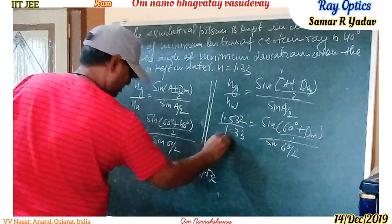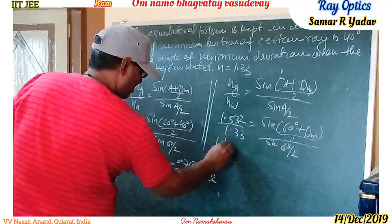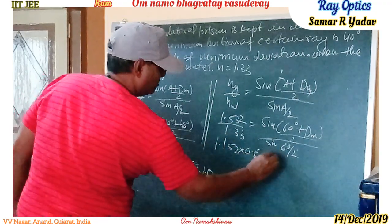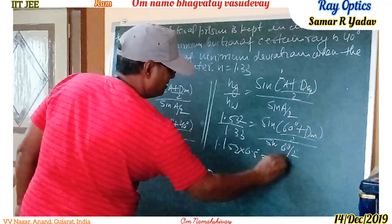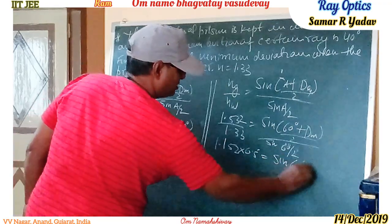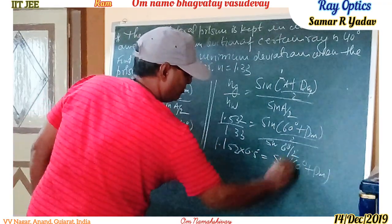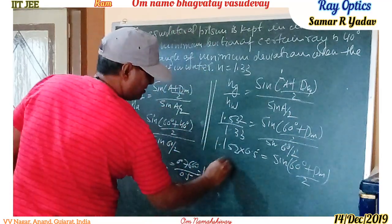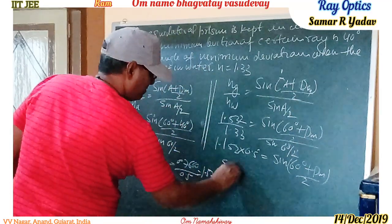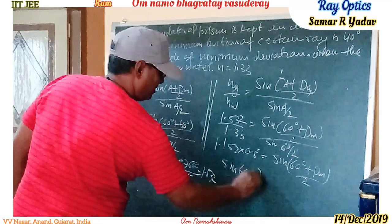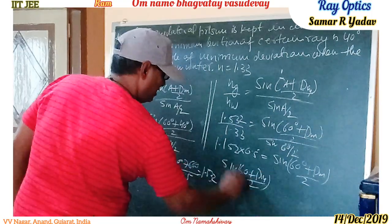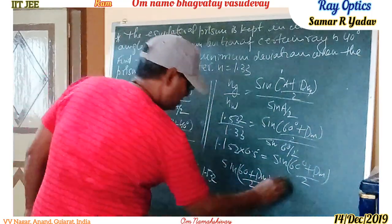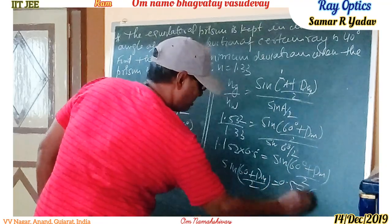So we can write: 1.152 multiplied by 0.5 is equal to sin((60 + δm) / 2). Therefore, sin((60 + δm) / 2) is equal to 0.576.